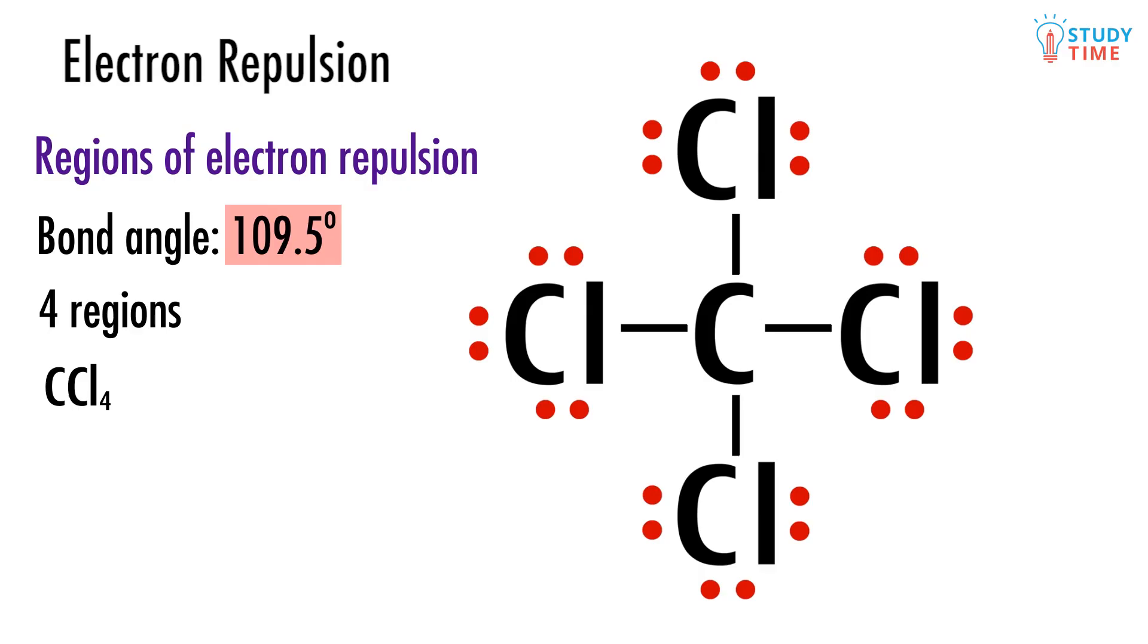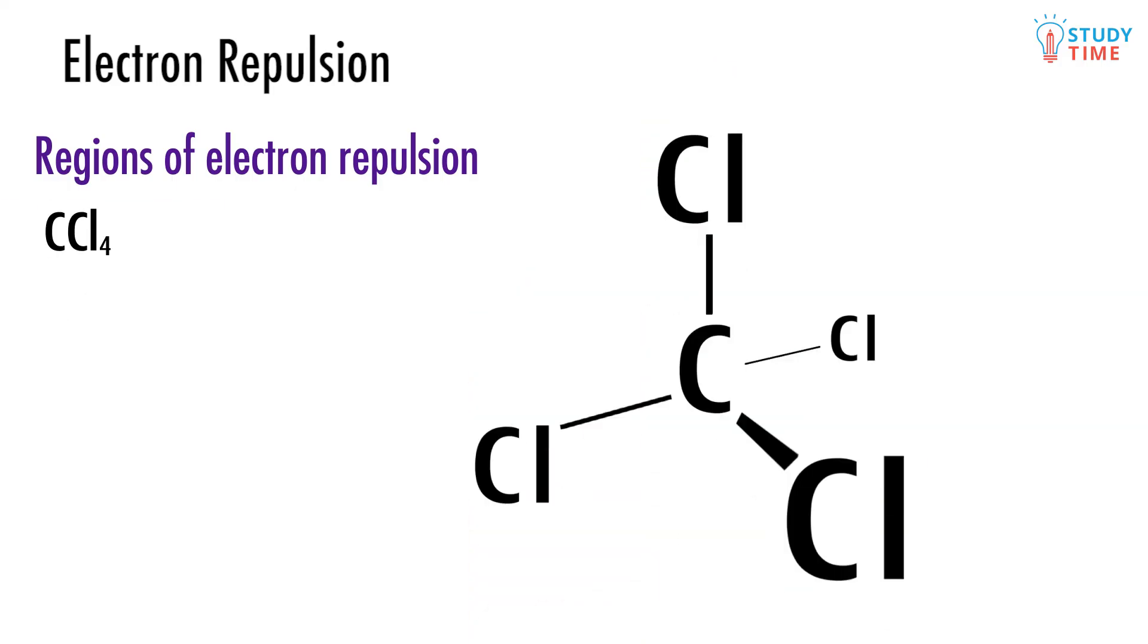In real life, CCl4 is a three-dimensional molecule. So imagine one Cl bond is going into the page away from you, and one Cl bond is coming out of the page toward you, like this. It can be helpful to make a model to visualize this 3D shape, either with molly mods from your chemistry teacher or with toothpicks and blue tack at home.